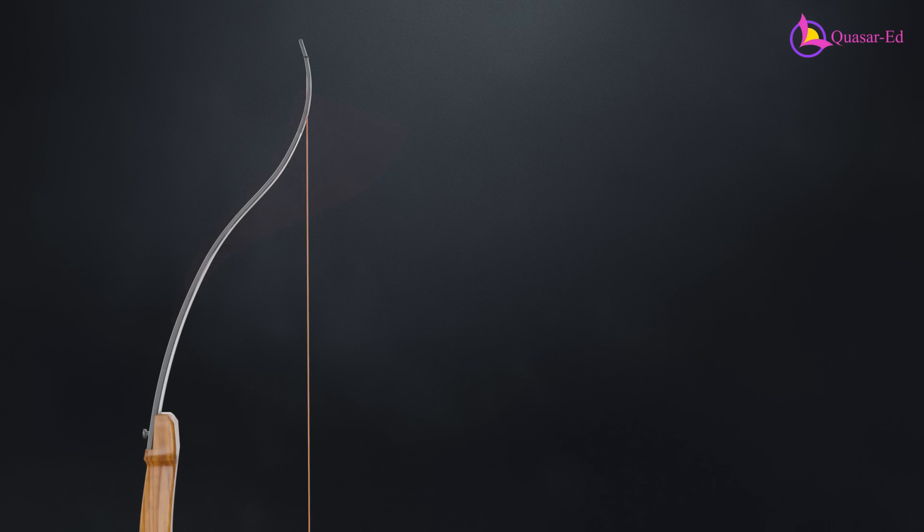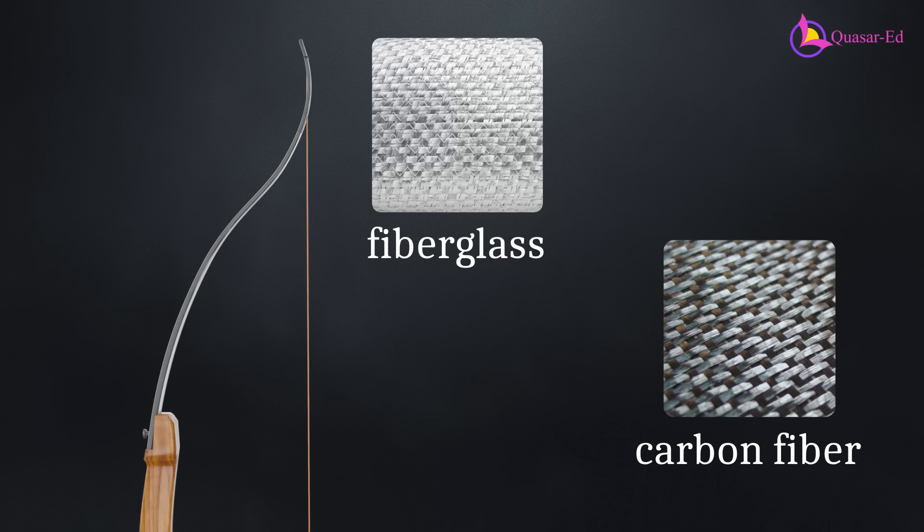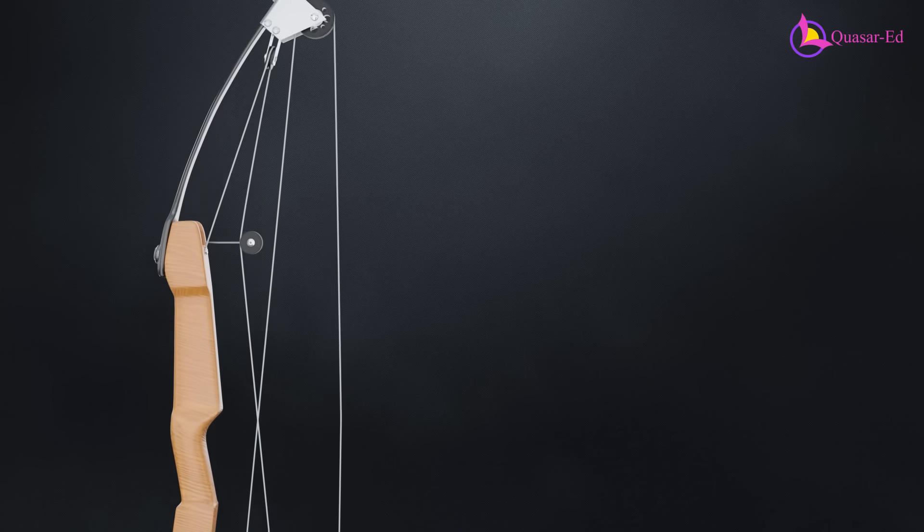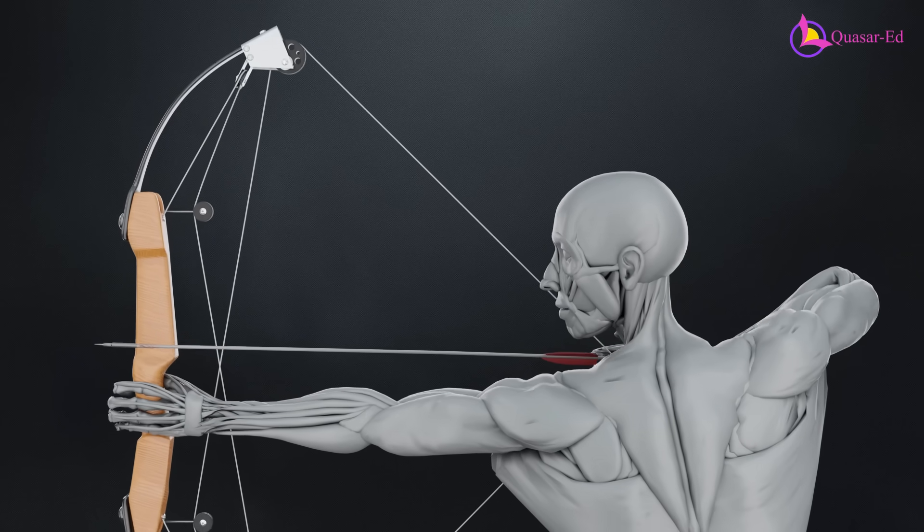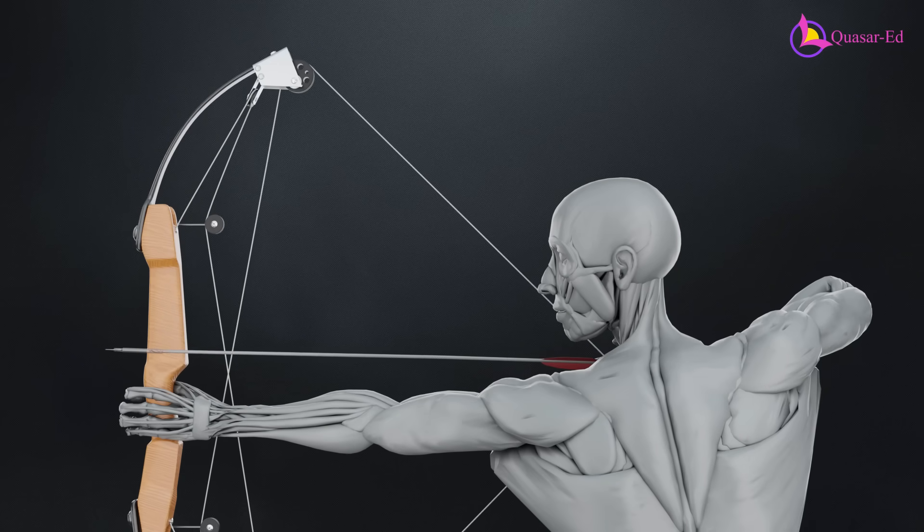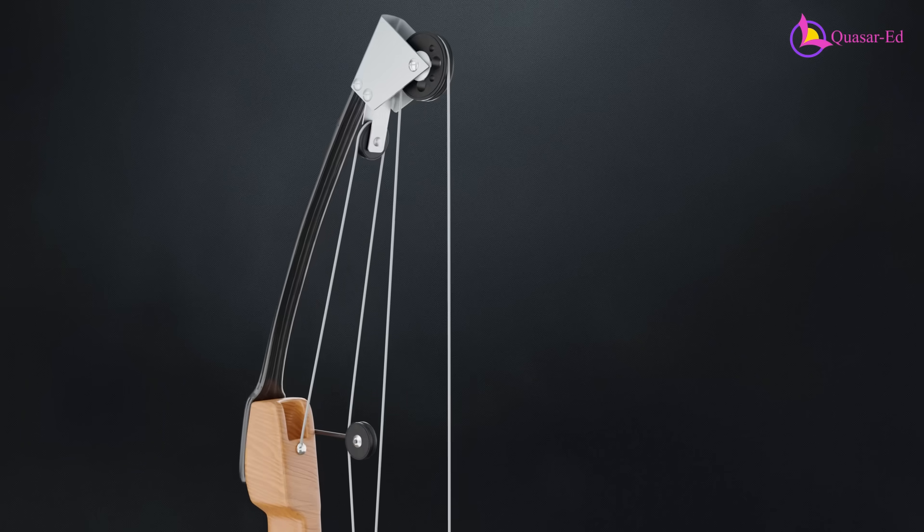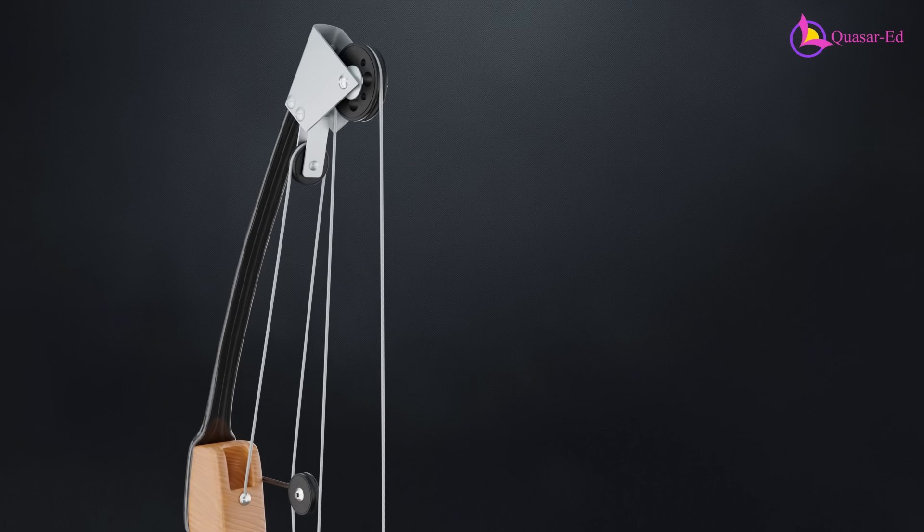However, advancements in materials like fiberglass and carbon fiber composites have allowed for stronger and more efficient limbs that can store significant energy even in smaller movements. By incorporating a pulley system, the compound bow extends the small bending movement to a full draw length, allowing the archer to utilize all their available muscles for a more comfortable and controlled shot. Compound bows are not more powerful because of their mechanical advantage, but because of the efficiency that comes from stronger materials.